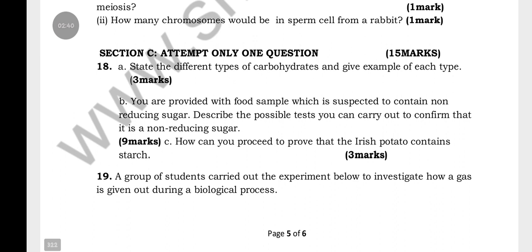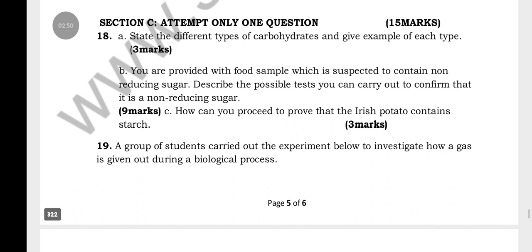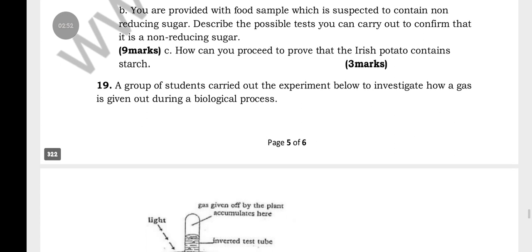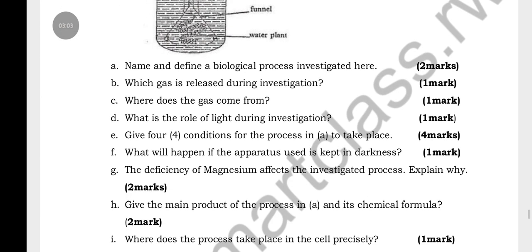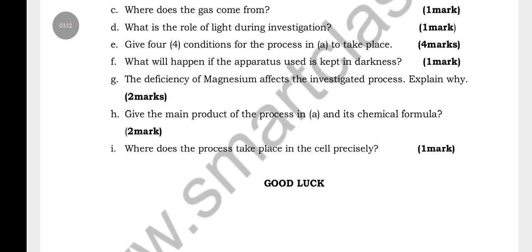Section C asks you to choose one question out of 15 marks. Question 20 is about carbohydrates and their examples. Question 19 presents an experiment designed to investigate which gas is given out during a biological process, asking you to name the biological process investigated, identify the gas released, and answer related questions.